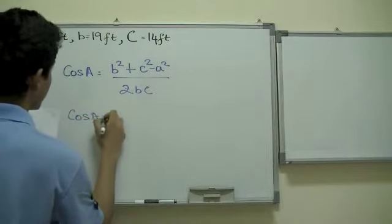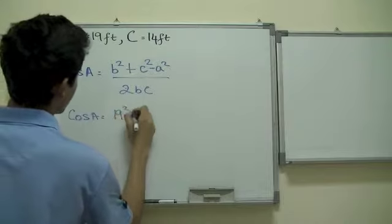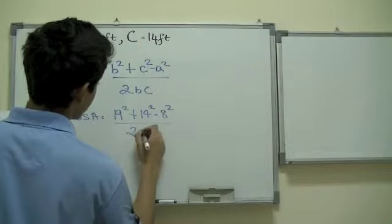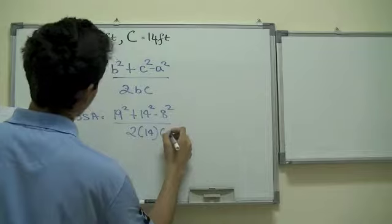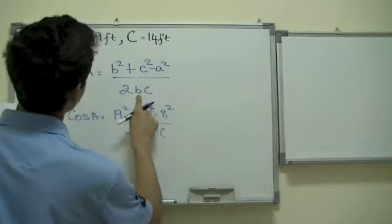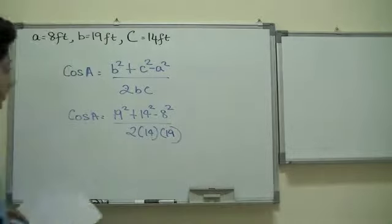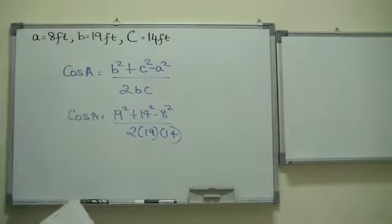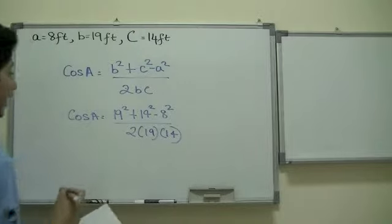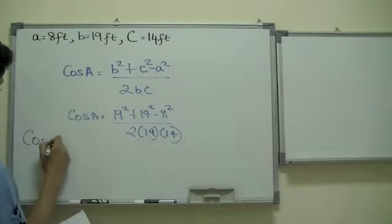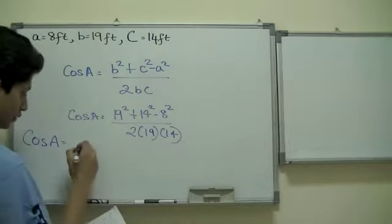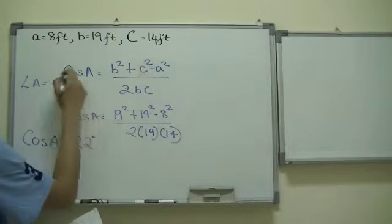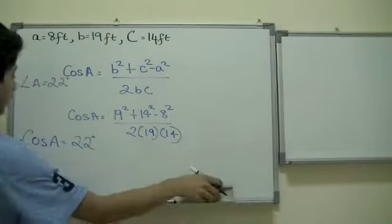Now cosine of A, if you want to find that, b squared is 19 squared plus 14 squared minus 8 squared, all divided by 2 times 19 times 14. Now if you do that in your calculator, you would find that the cosine of angle A would be equal to 22 degrees. So the angle A of this triangle is 22 degrees after all the process we have done.